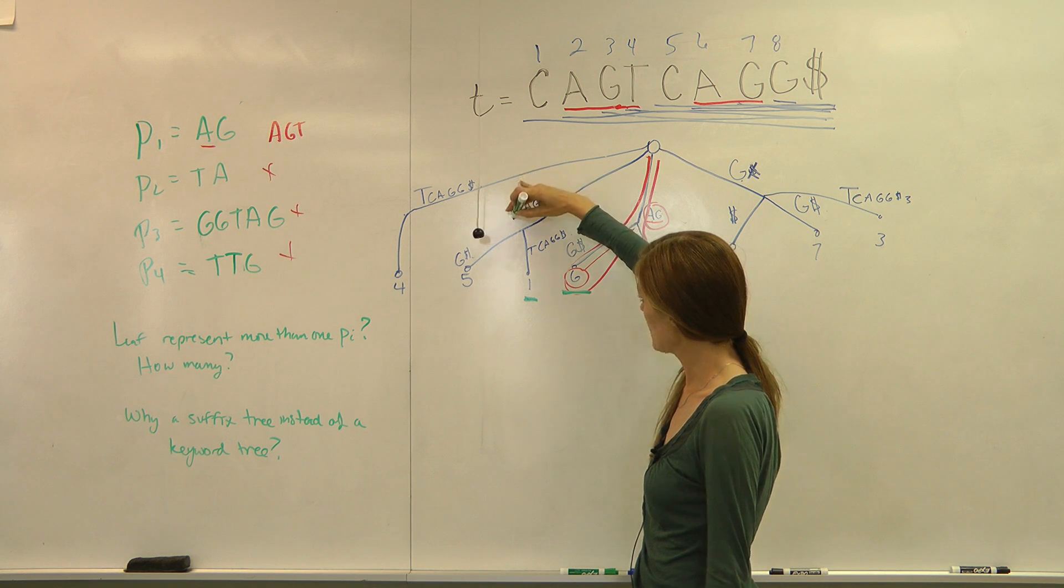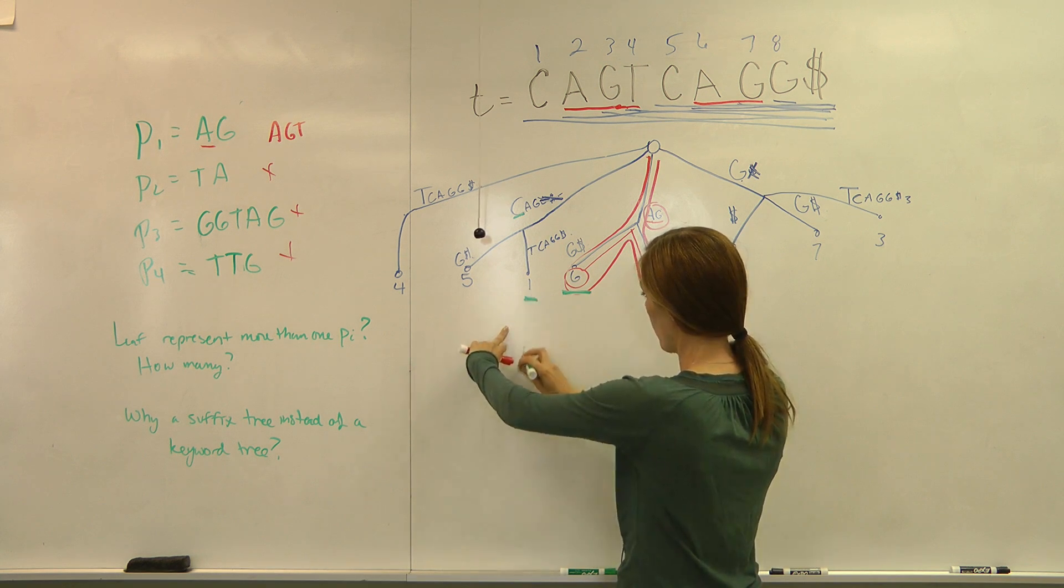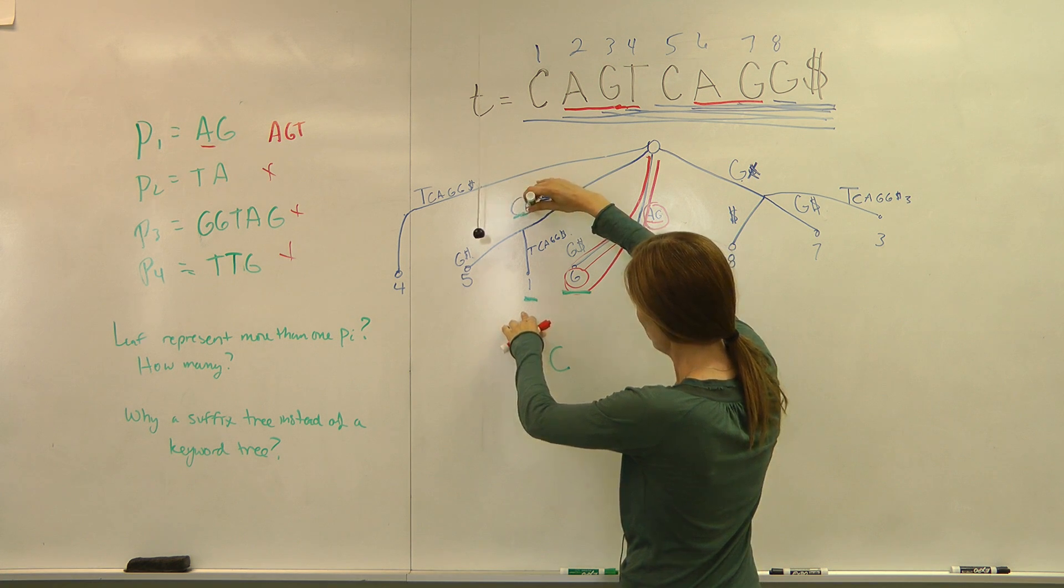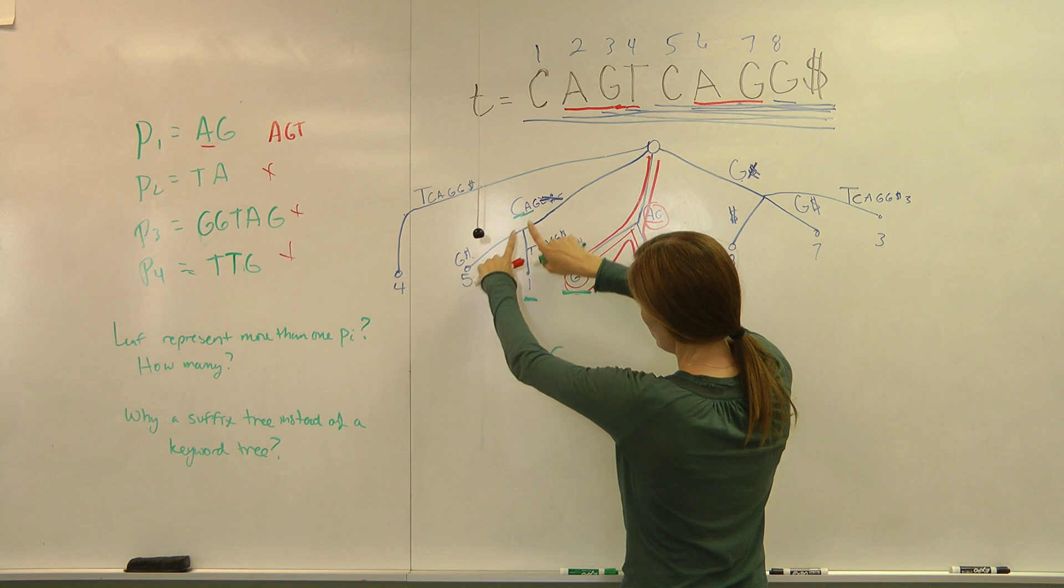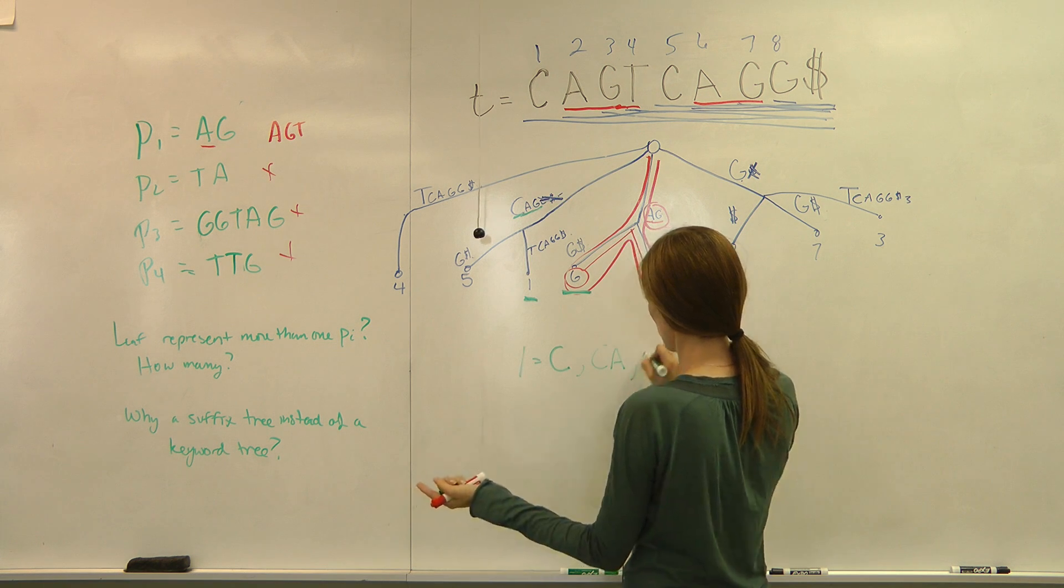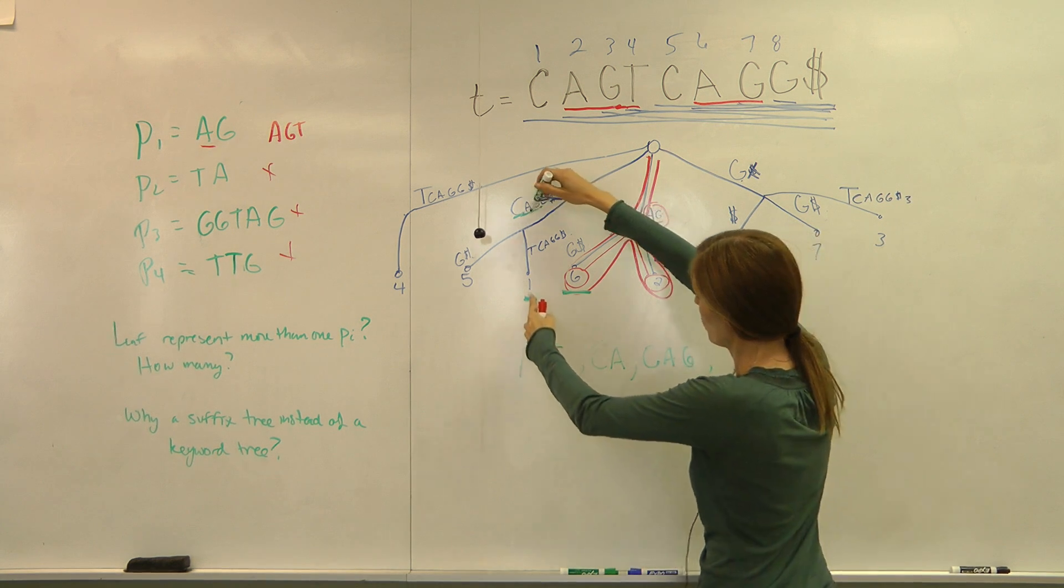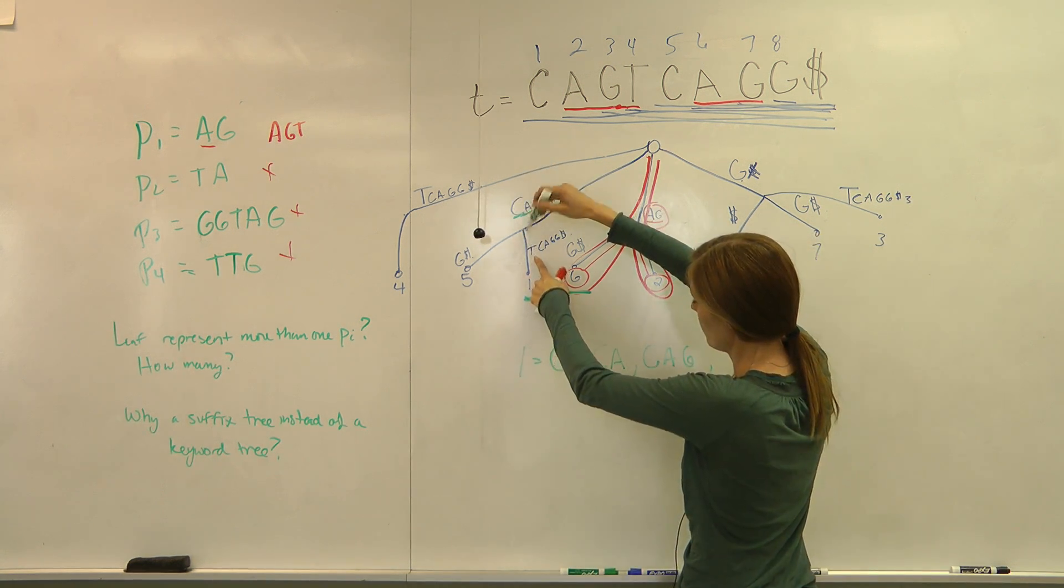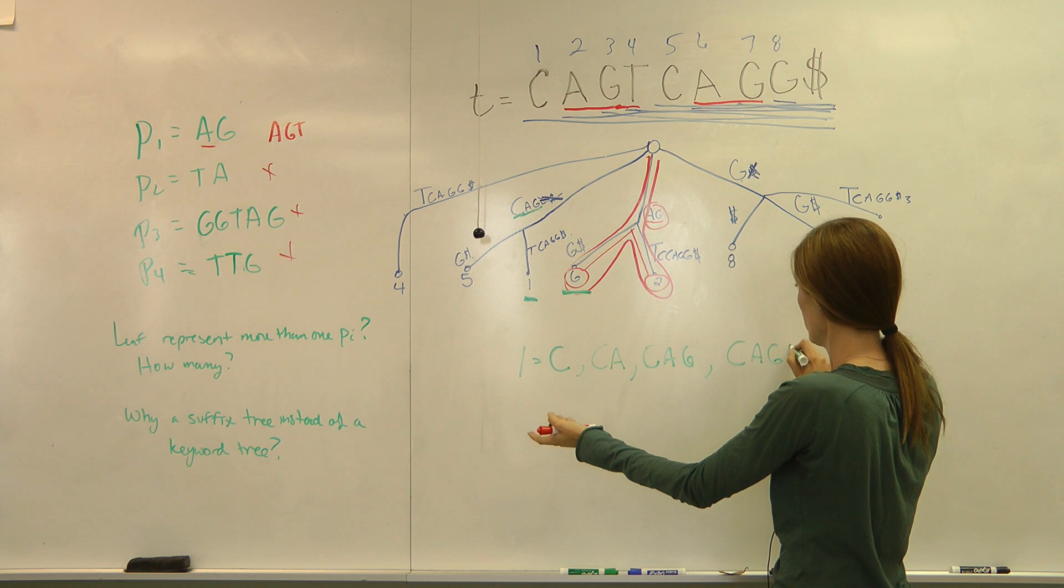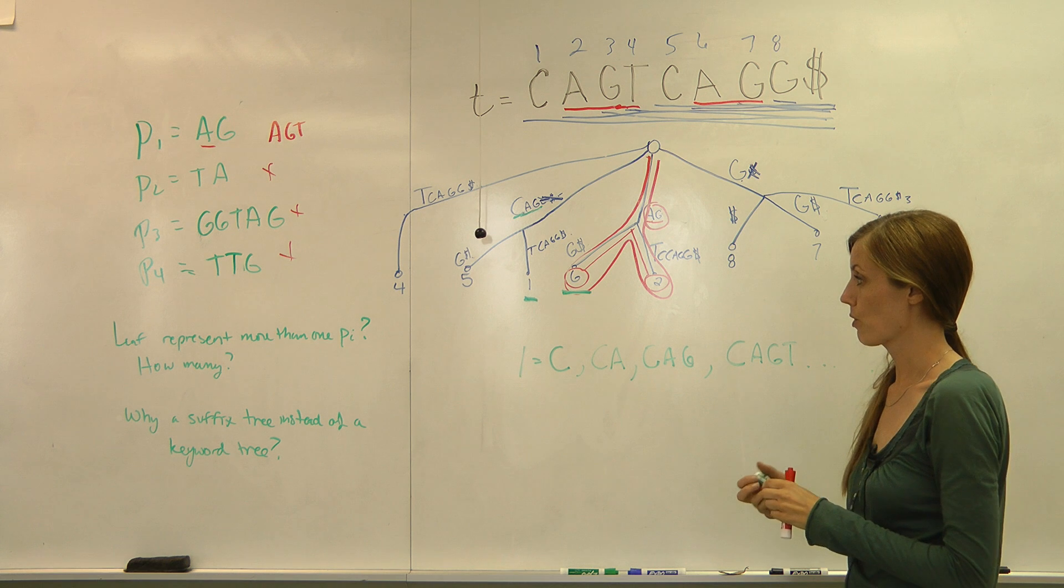Well, if you had the pattern C, you'd stop. You'd go to both of these. So one can represent the pattern C. And then if you had CA, you would stop because you found it. And you'd go to the leaves. So it could also represent CA. And then it could also represent CAG. And what else can it represent? CAGT. And you would stop because you found your pattern. So CAGT. So clearly, a leaf can represent more than one pattern.